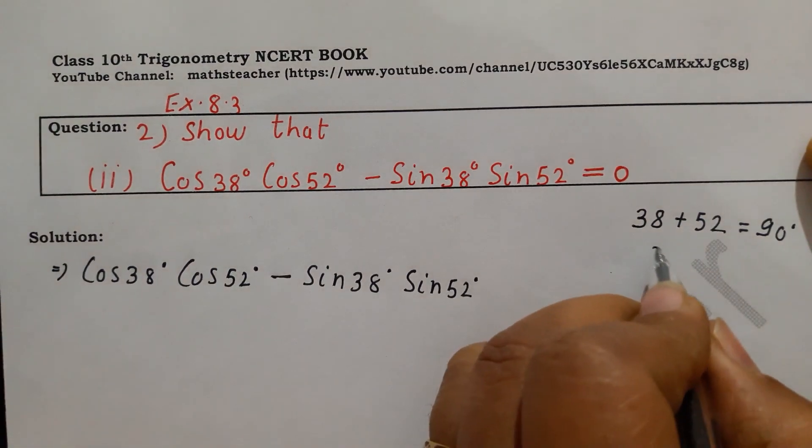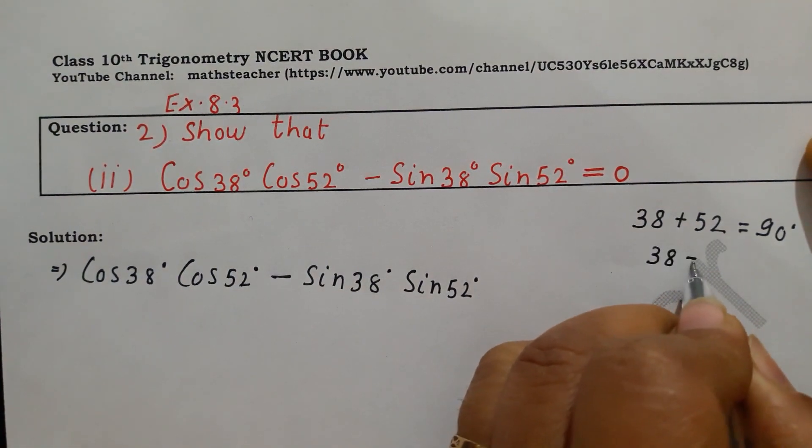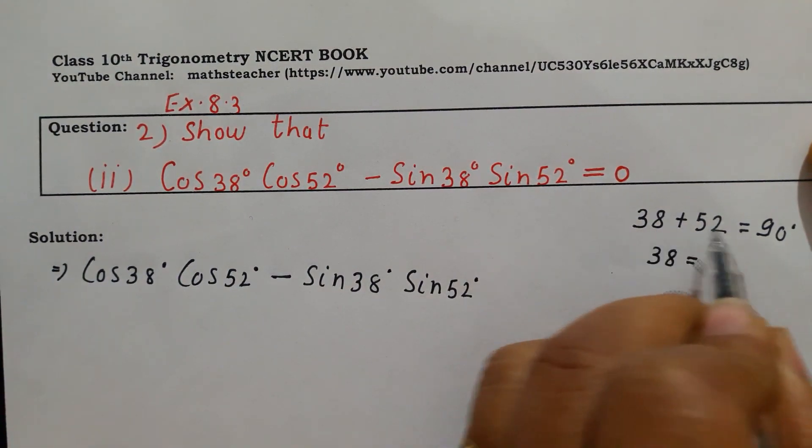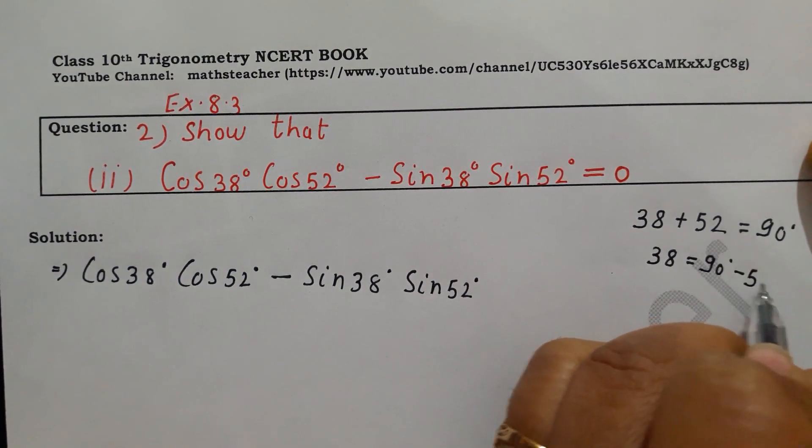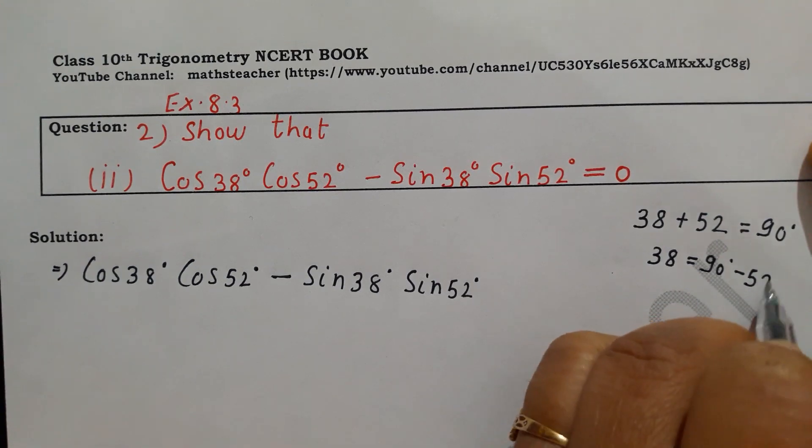When we solve complementary angles, we change one angle. Here there are two: 38, 52. We will put the value of one angle. So here we are putting 38, so it will be 90 minus 52.